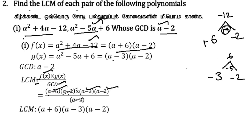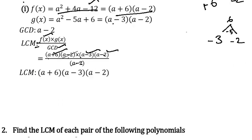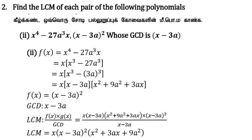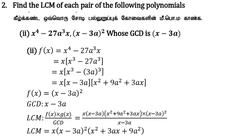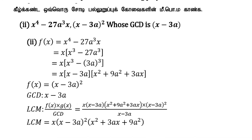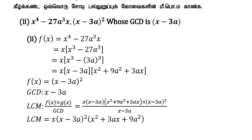So this is the answer for the first part. Next, the second subdivision: f(x) is x⁴ - 27a³x, and g(x) is (x - 3a) whole square. The GCD value is x - 3a.